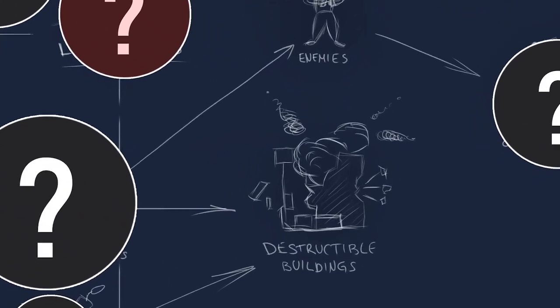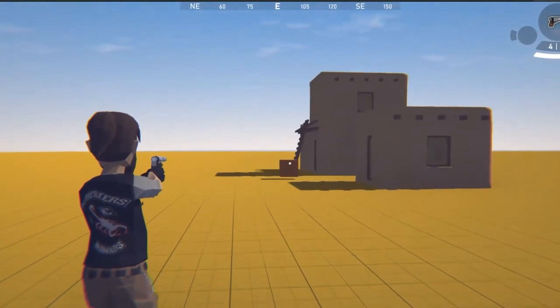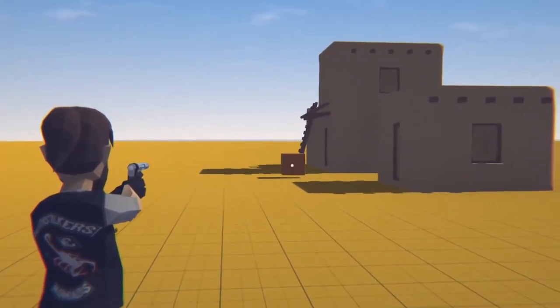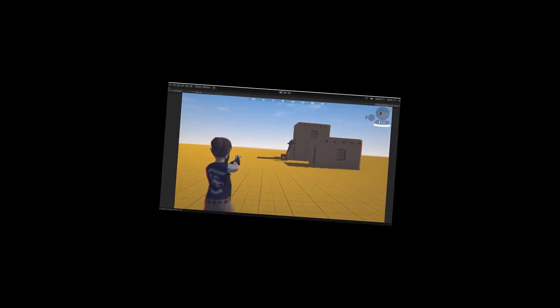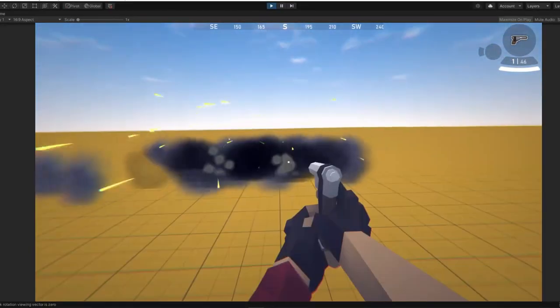Can you imagine making a destruction system and not adding explosives to the game? Me neither. That's why I added a very cool feature. Can you guess what it is? It's explosives. They can hurt buildings, people, nature, other explosives and so on.